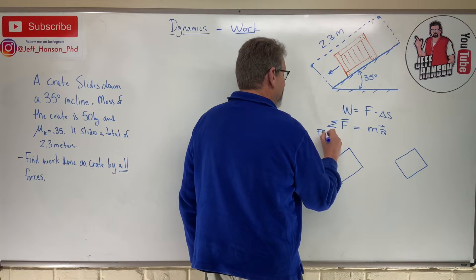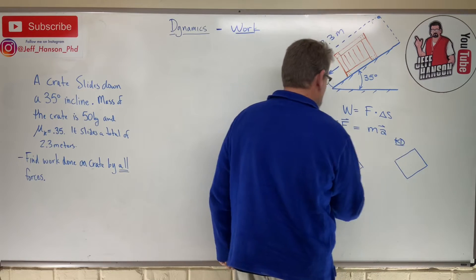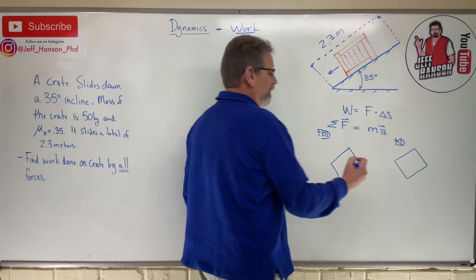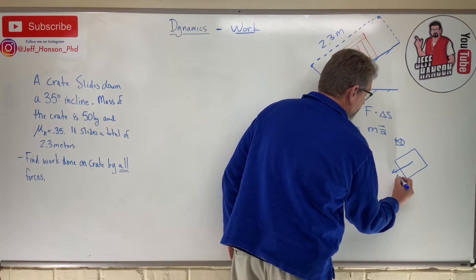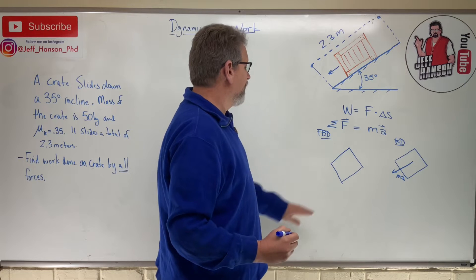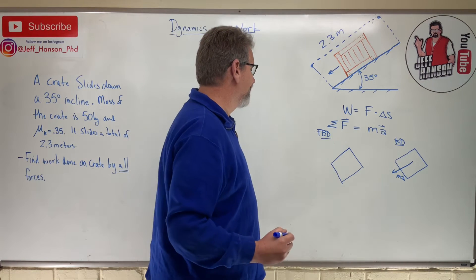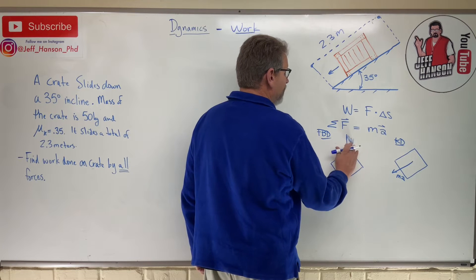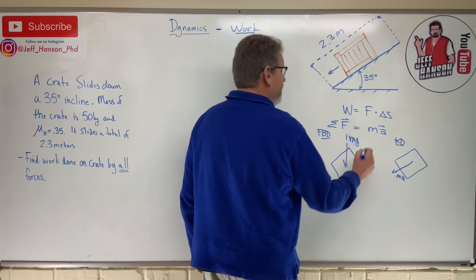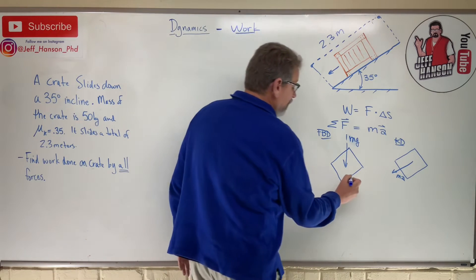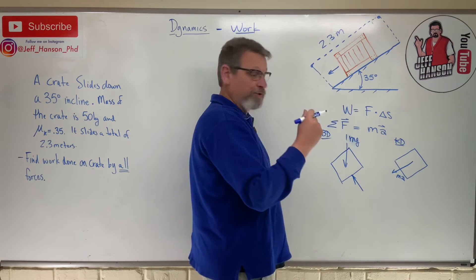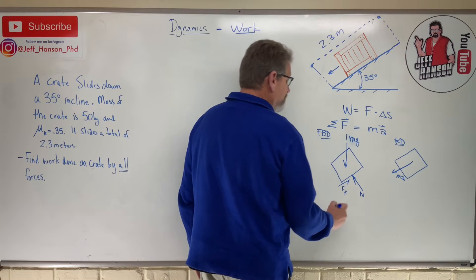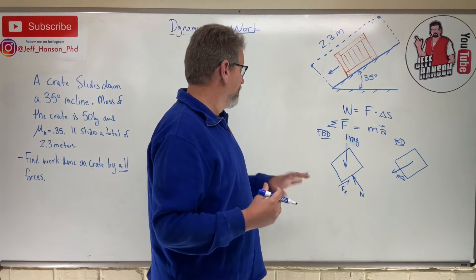On the kinetic diagram, ma represents the motion — the box is moving down the hill. On the free body diagram, I have weight (mg acting downward), a normal force N — the plane pushing back on the box — and a friction force opposing the motion and pushing up the plane. Those are all the forces acting on this system.